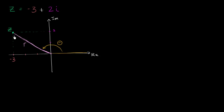I want you to pause this video and see if you can find a relationship between r, theta, and negative three and two. Given this complex number in rectangular form, can you figure out what r and theta are? To help us, let's remind ourselves of the unit circle definition of trig functions, because we're going to use some trig functions to relate r, theta, two, and negative three. So I'm going to construct a unit circle here.